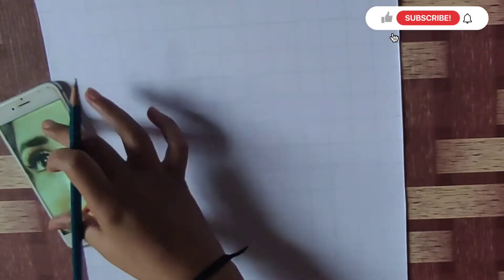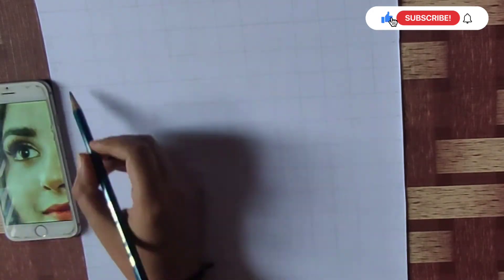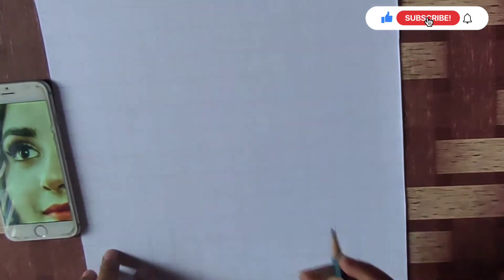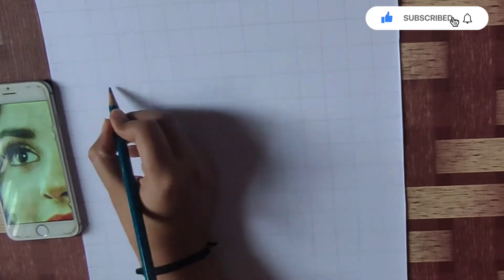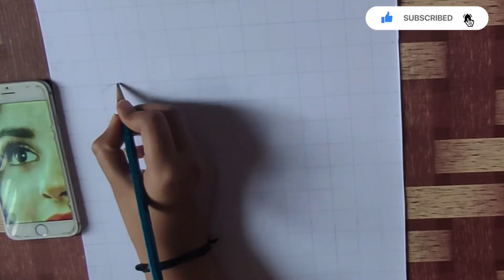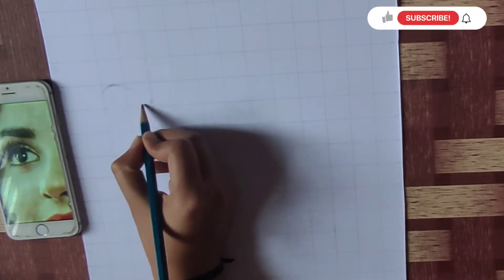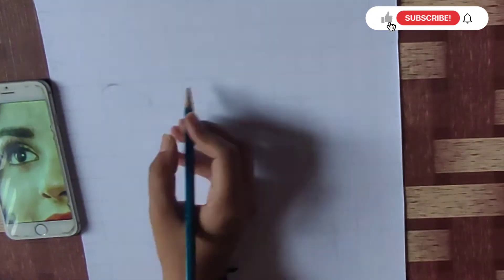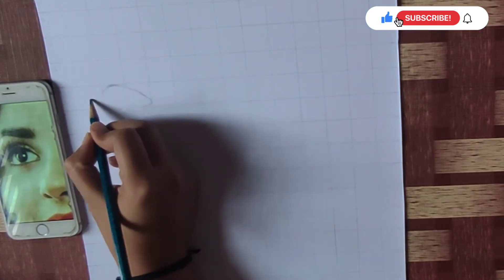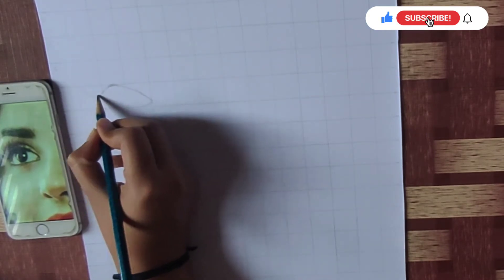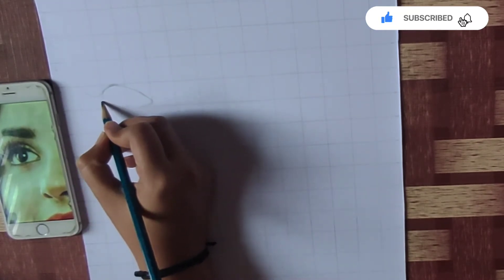According to this grid, you mark a point of your eyes. I start from the eyes. So let's draw the eyelashes.